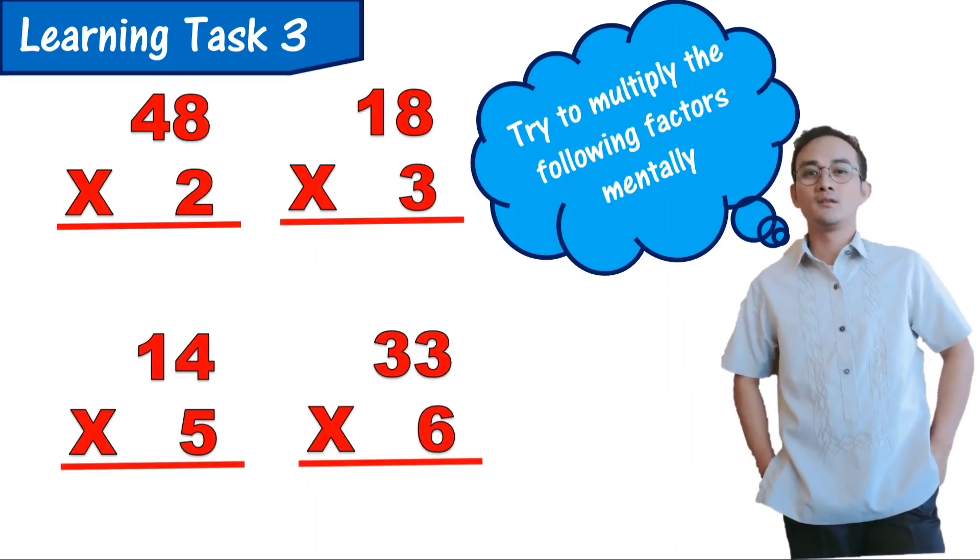Try to multiply the following factors mentally: 48 times 2, 18 times 3, 14 times 5, and 33 times 6.